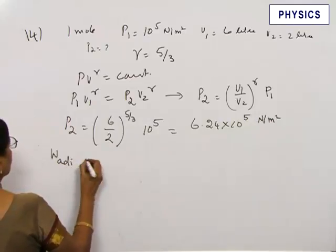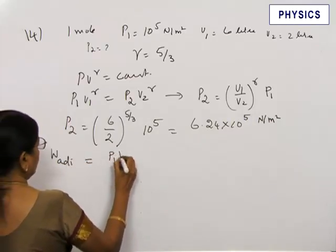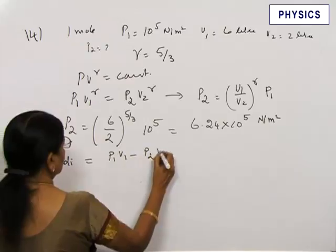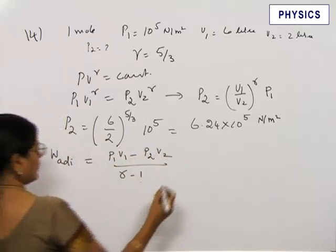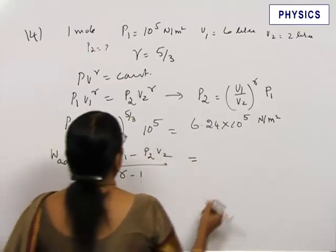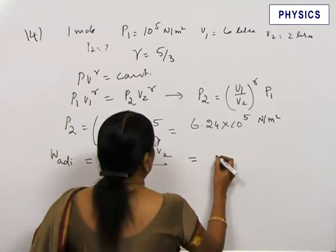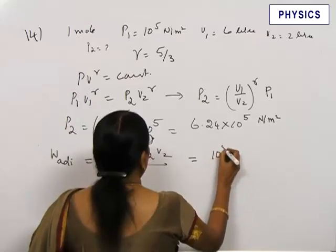W adiabatic equals (P1V1 - P2V2)/(gamma - 1). Substitute these values: P1 is 10^5.